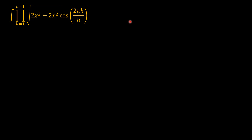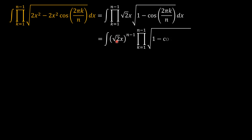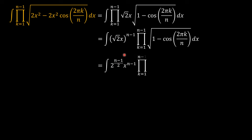The first thing is to pull out the 2x squared. When we pull this 2x squared out, it leaves us with 1 minus cosine(2πk/n) under the square root sign, and outside we have square root of 2x. Since we are multiplying this n minus 1 times, we can bring this out of the product sign so that we have square root of 2x to the power n minus 1. We can separate the square root of 2 and the x, so we have 2 to the power (n−1)/2 times x to the power n minus 1.